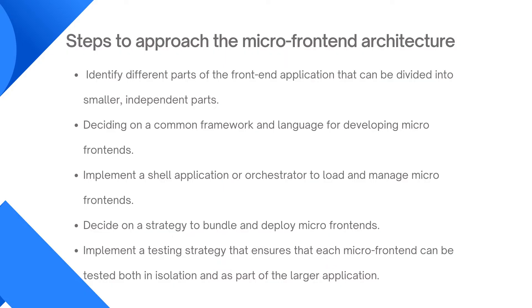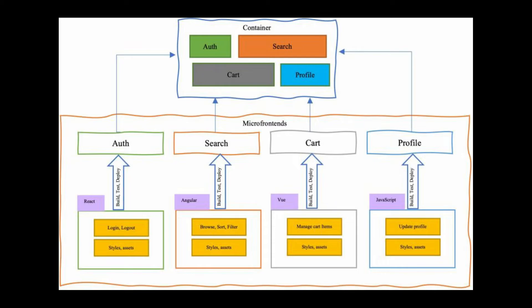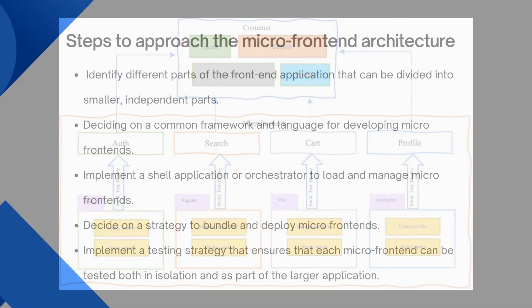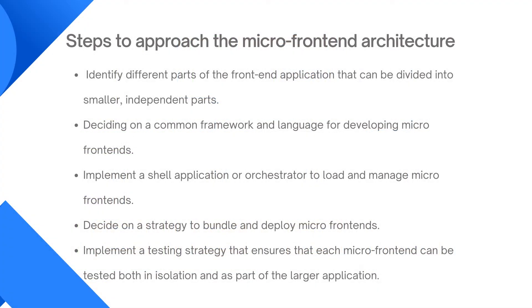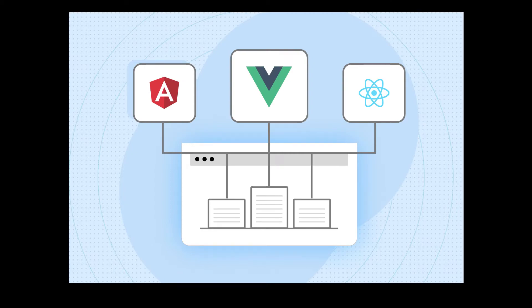Now let's see what steps you should follow when building a micro front-end application. The first step is to identify different parts of the front-end application that can be divided into smaller independent parts — breaking down your application into components like user authentication, search functionality, and anything else that can function independently. The second step is deciding on a common framework and language for developing micro front-ends, ensuring consistency and effective collaboration between teams, and enabling code sharing and streamlined development.